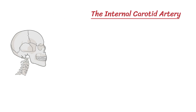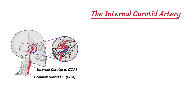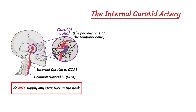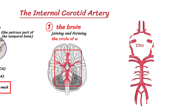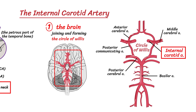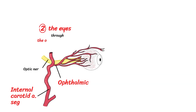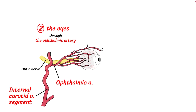The internal carotid artery, as the name suggests, takes a different path, carrying blood internally into the cranial cavity. It does this via the carotid canal in the petrous part of the temporal bone. Unlike the external carotid artery, the internal carotid artery does not supply any structures in the neck. Instead, it supplies the brain by joining and forming the circle of Willis, the eyes through the ophthalmic artery, and the forehead.